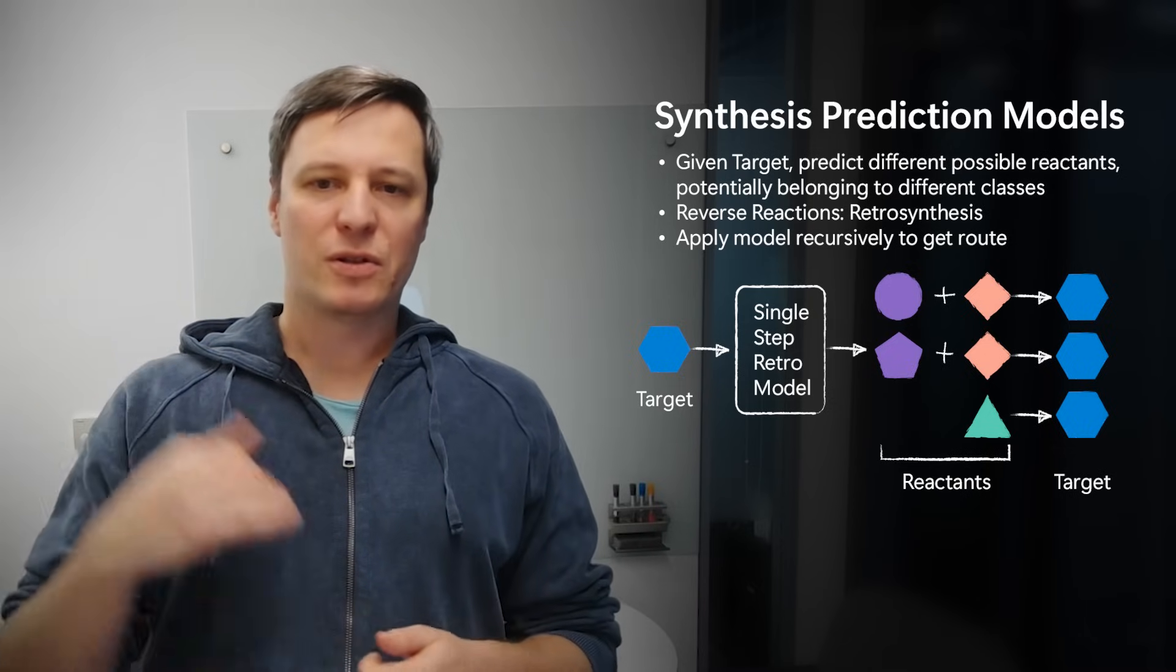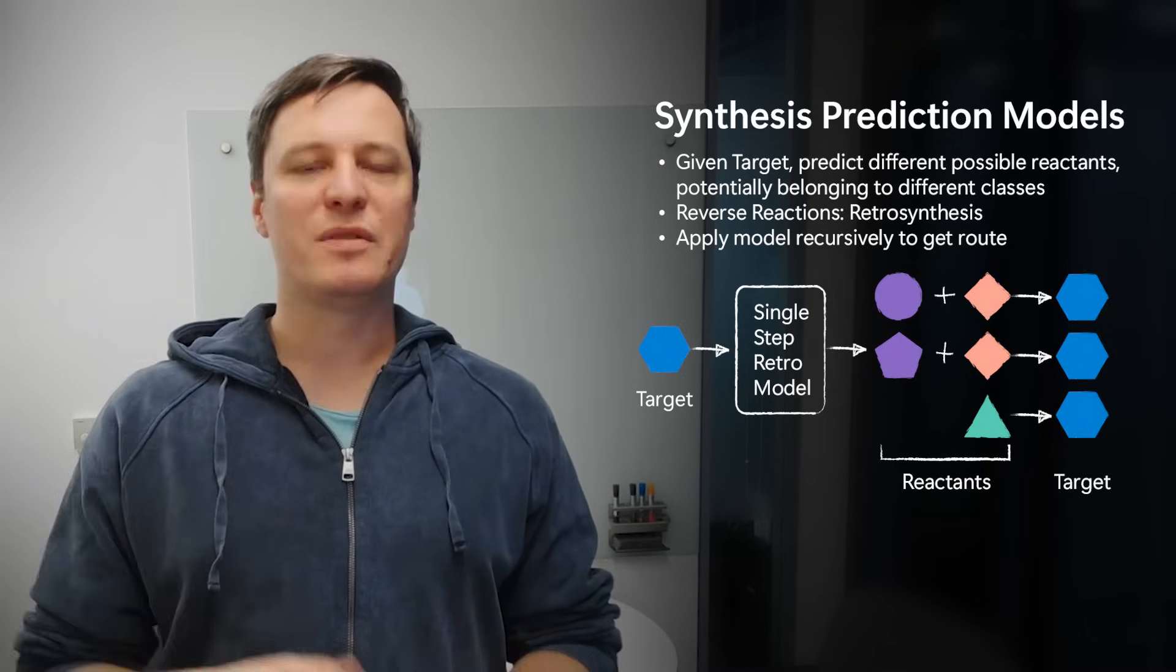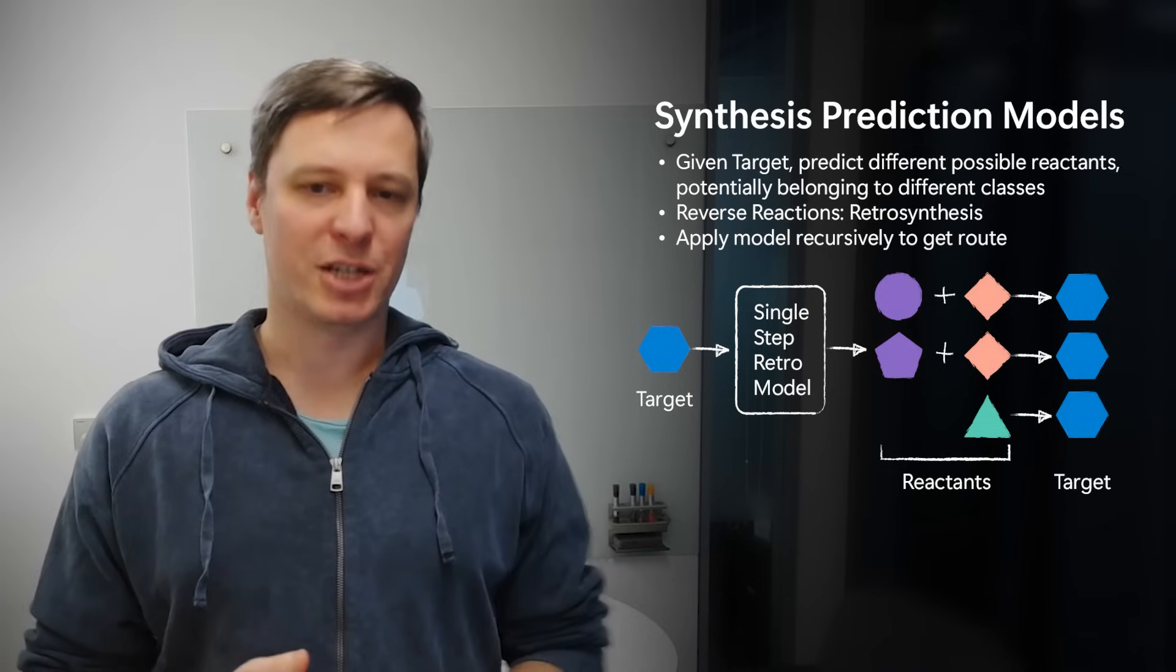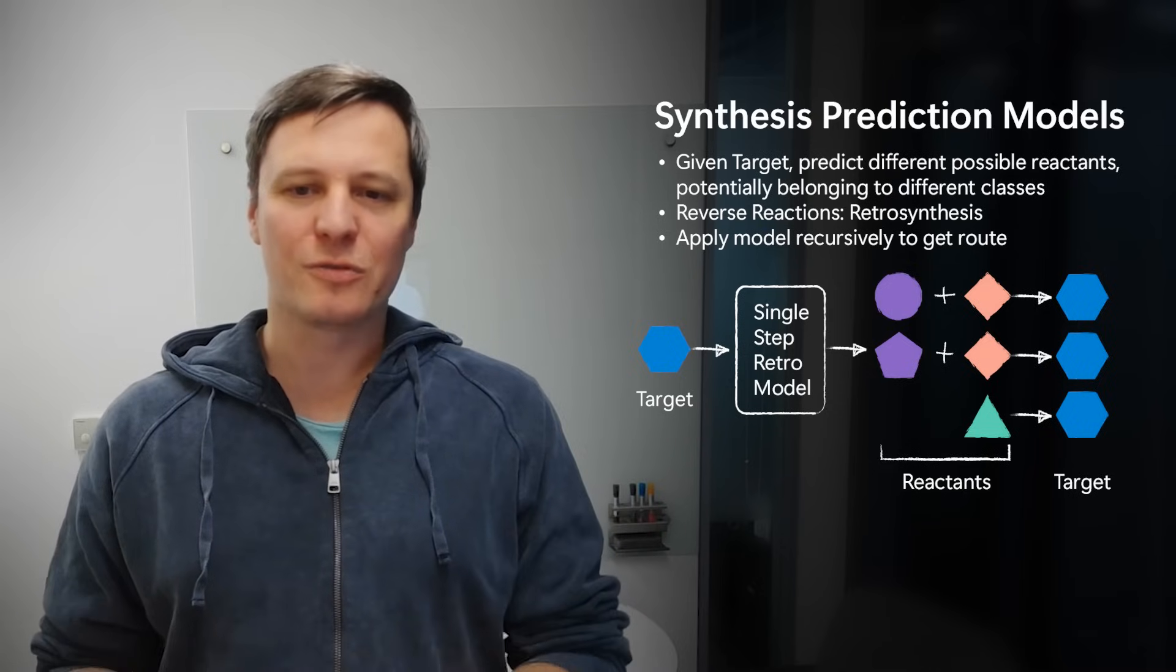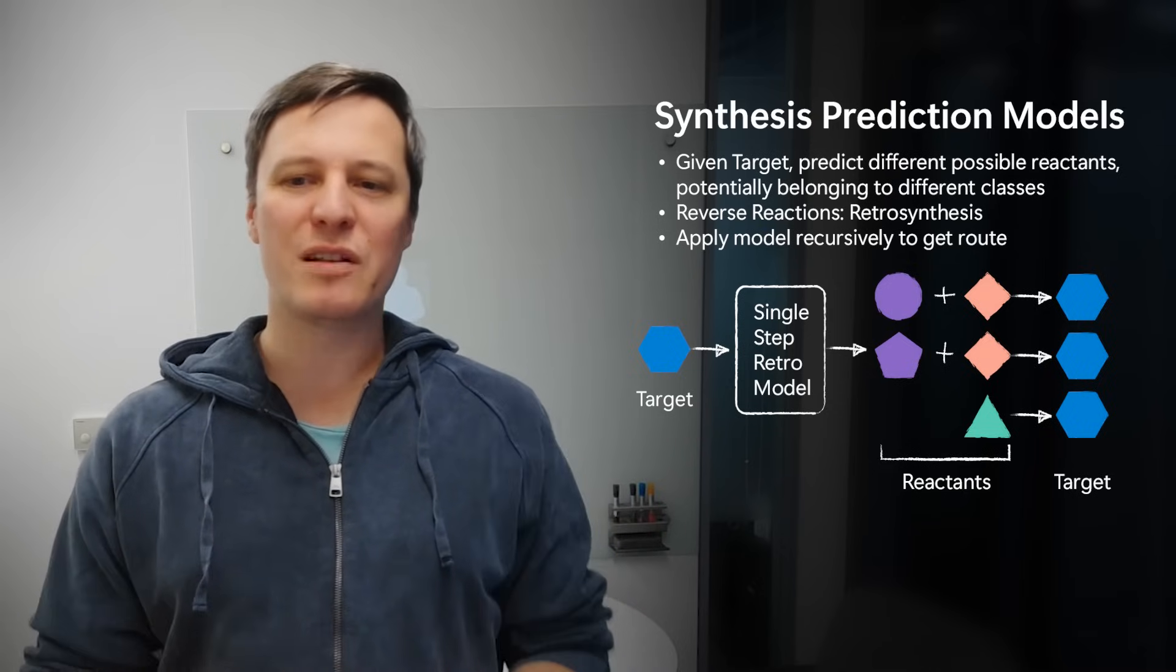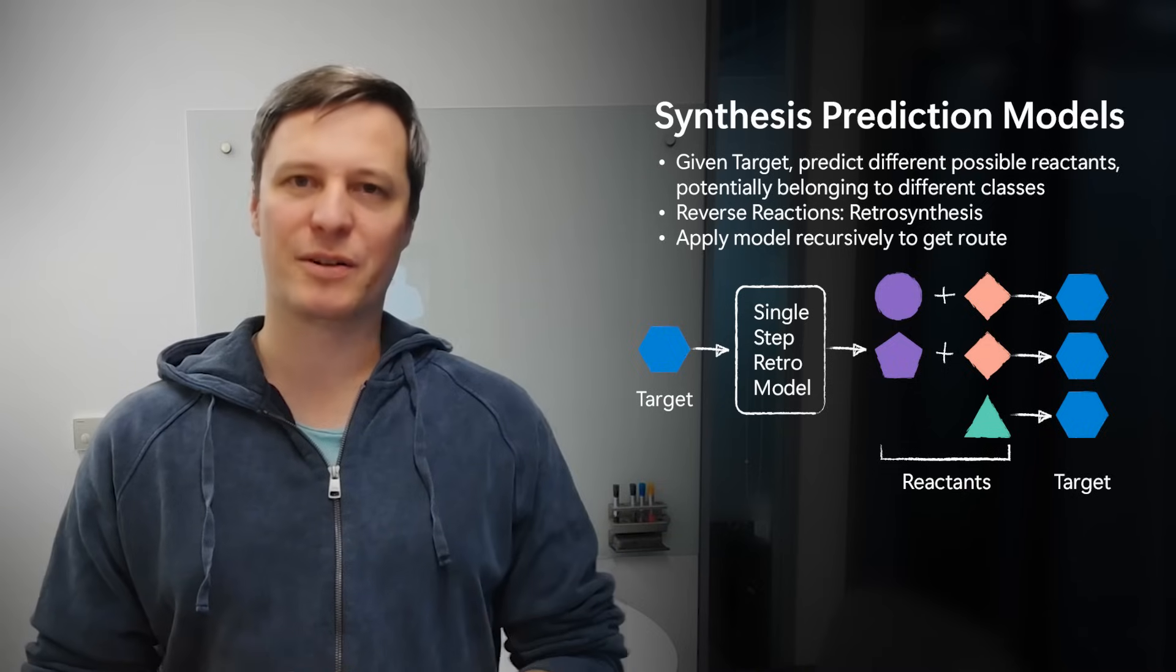This is similar to learning how to predict the inverse moves of a position in a chess game. But in chess, it's relatively simple because we don't really need a model—we can just implement the rules of the game perfectly as a very simple program.